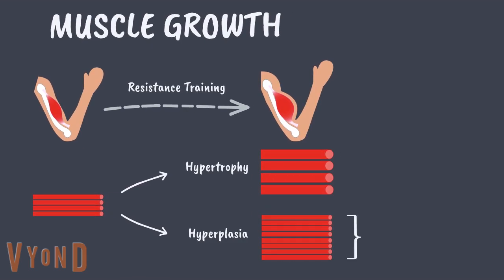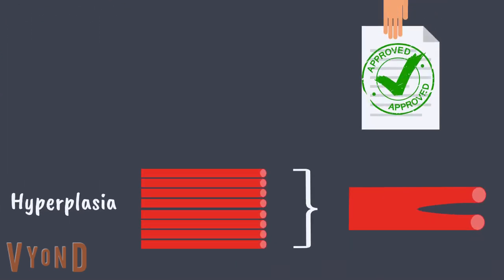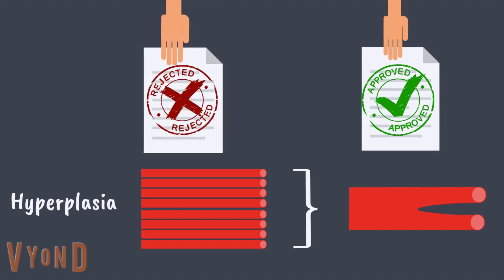Hyperplasia occurs by the longitudinal splitting of muscle fibers. Evidence supporting this mechanism of muscle growth is controversial, with some studies providing support and others rejecting it. Additionally, if hyperplasia does occur, it only contributes to about 5-10% of muscle growth.